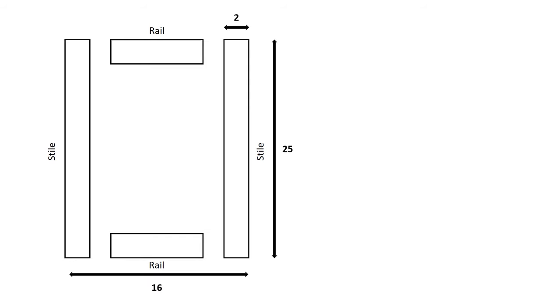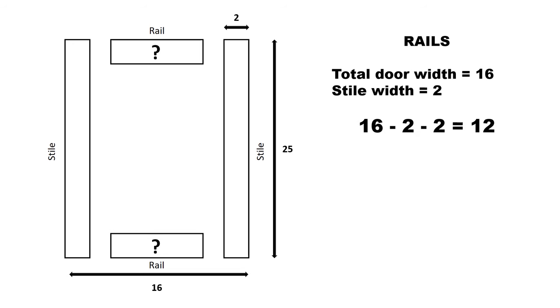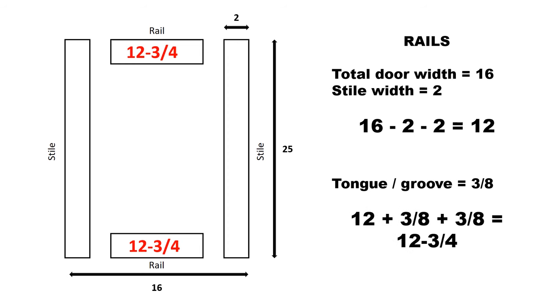I'm using 2 inch wide boards and I want my door to be 16 inches wide, so how long should my rails be? To calculate the length of the rails, I'll start with my total door width and subtract the width of my two stiles, which are 2 inches. So that leaves me with 12 inches. However, I know I'll be cutting grooves that are 3 eighths deep, so I'll add 3 eighths for each side, which leaves me with a total rail length of 12 and 3 quarters.